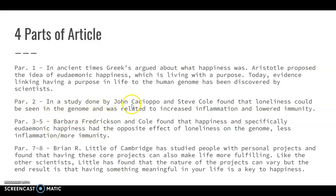Paragraph two talks about a study by John Cacioppo and Steve Cole. They looked at loneliness and found it can be seen in the human genome — related to increased inflammation and lowered immunity. Paragraphs three through five talk about how Steve Cole worked with Barbara Fredrickson to do an experiment looking for the opposite effect. Fredrickson thought they'd see an impact through hedonistic happiness; Cole didn't think there would be any effect. They were both wrong — they found that specifically eudaimonic happiness, or having a purpose in life, had a positive effect on the genome: less inflammation and more immunity.